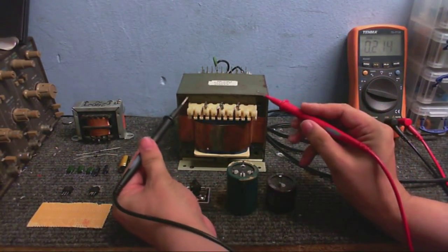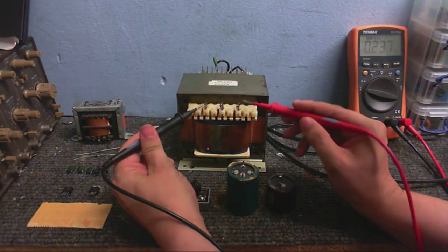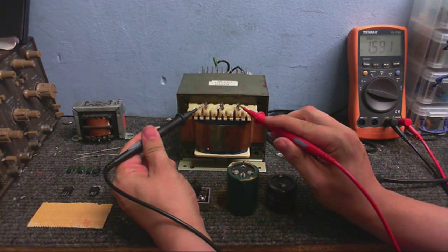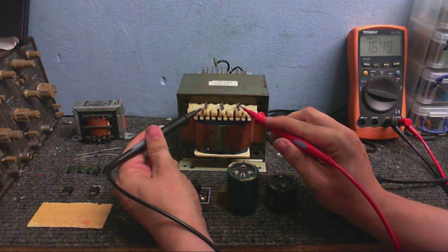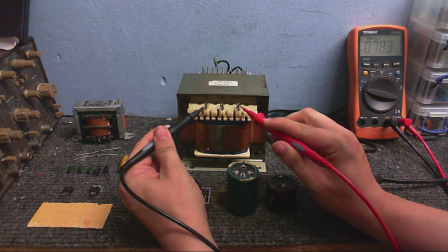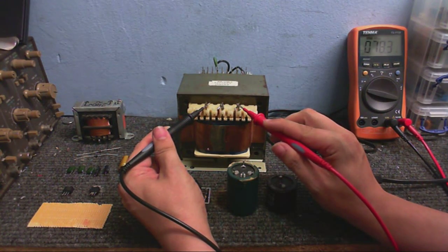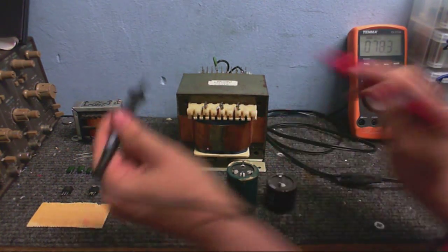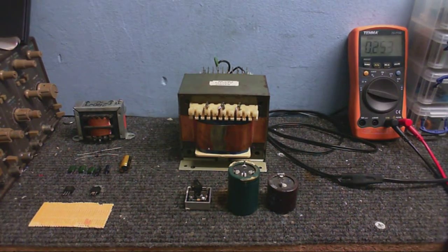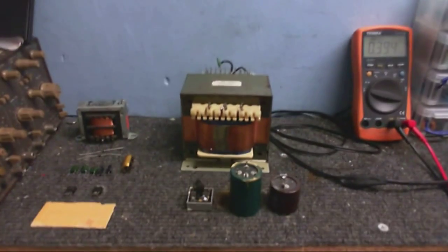You see those on a lot of power supplies, mostly on switch mode supplies, but that's just so we don't get a huge inrush when these capacitors get charged up. So let's see what our output voltage is. 1.5 volts? That can't be right, surely. Oh, that looks more like it. 78 volts. So now we know what's going on, let's make that into a power supply. Better unplug it first.